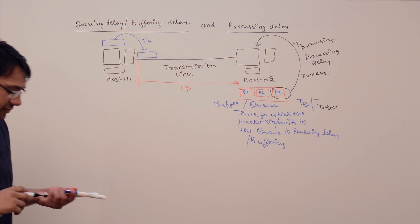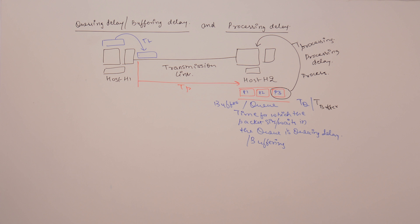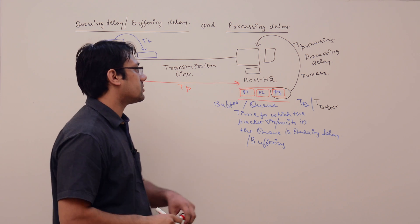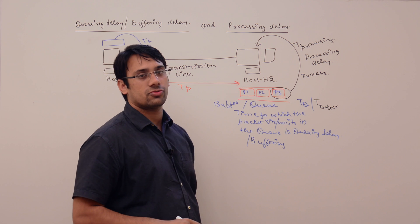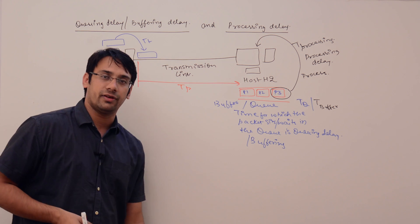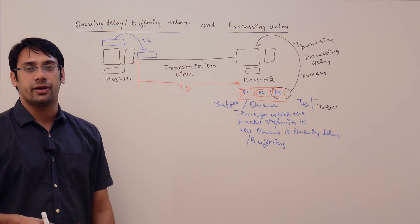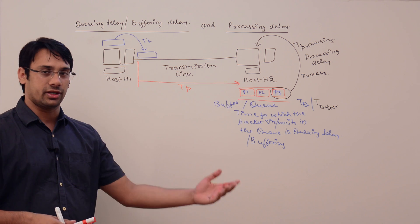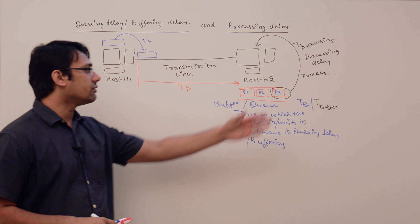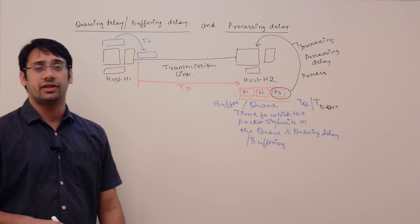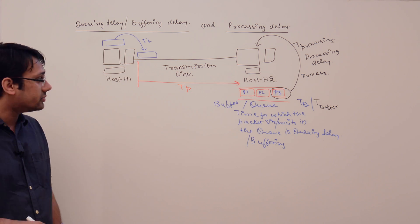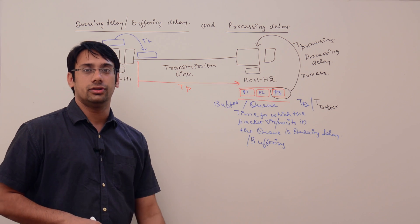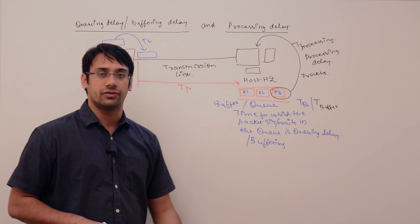This processing delay may vary from system to system. A fast processor will have a very small processing delay, while a slow processor will have a larger one. It also depends on the scheduling algorithm the processor is using, for example round-robin scheduling or any other scheduling algorithm. So the processing delay is dependent on the state of the system.